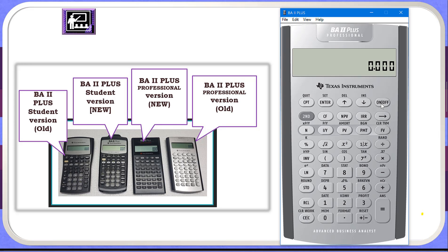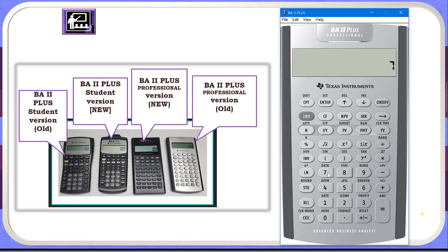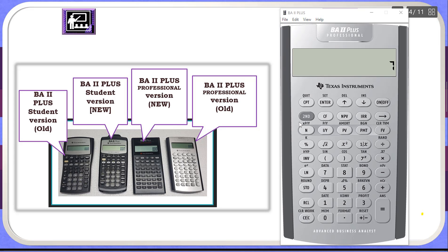As you can see, every key on the BA 2 Plus calculator has two functions. Each key has a primary function, which is noted on the key itself — for example, if you click 7 it will enter 7. There is also a secondary function, noted on the top of every key. For example, AMORT is noted above PV, and FORMAT is noted above the dot or period key.